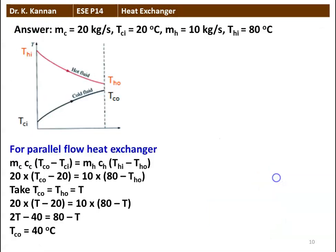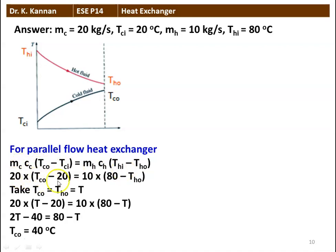We will see how in the next slide. For parallel flow arrangement: MC = 20 kg/s, TCI = 20°C, MH = 10 kg/s, THI = 80°C. Heat gained by cold fluid equals heat lost by hot fluid: MC × CC × (TCO − TCI) = MH × CH × (THI − THO). Since specific heat of both water is the same, it cancels: 20 × (TCO − 20) = 10 × (80 − THO). Setting TCO = THO = T and calculating, TCO = 40°C. So the cold fluid outlet temperature is 40°C in the case of parallel flow heat exchanger.